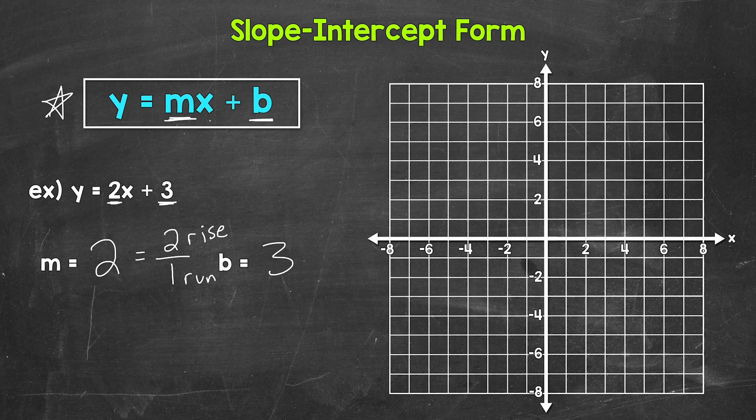Now we graph and we start with the y-intercept, which is 3. When graphing, we start with the y-intercept. And that's because we know exactly where that point is. Then we use the slope to go from there. We need to plot a point at 3 on the y-axis, at 0, 3. That's right here. And that's our y-intercept.